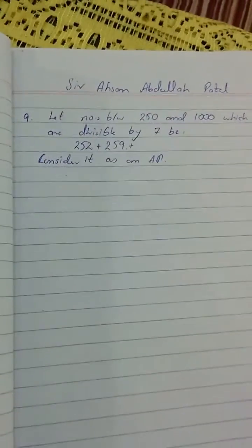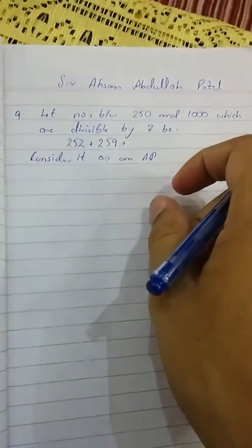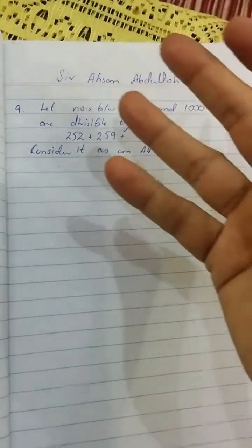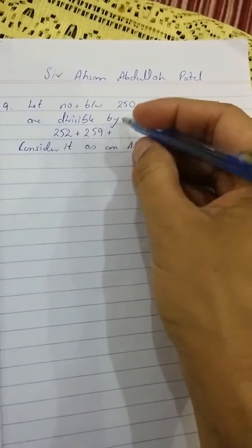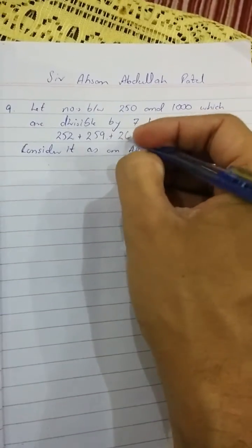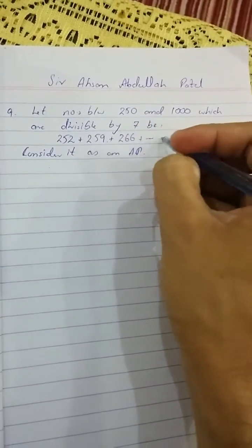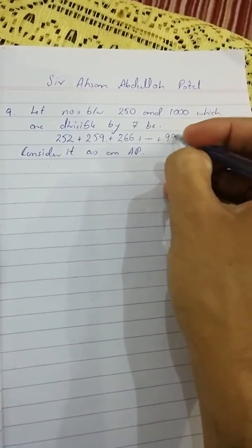As you might remember from childhood, when we didn't know the table, we would add the number repeatedly. So we add 7 to 259, which gives 266. And in exactly the same way, the last number will be 994.